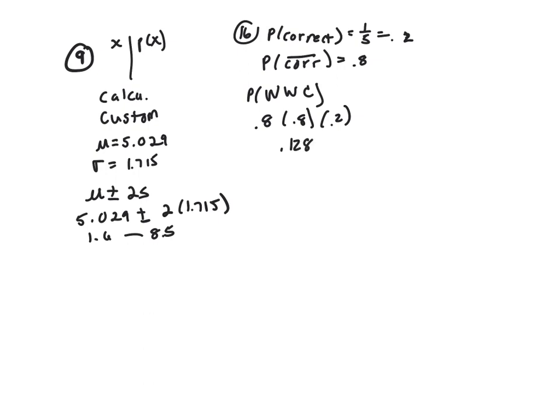On number 22, number 22 says 50% of people believe in reincarnation. This is a binomial problem. That means P is 0.5, 4 adults are selected. That means N is 4.